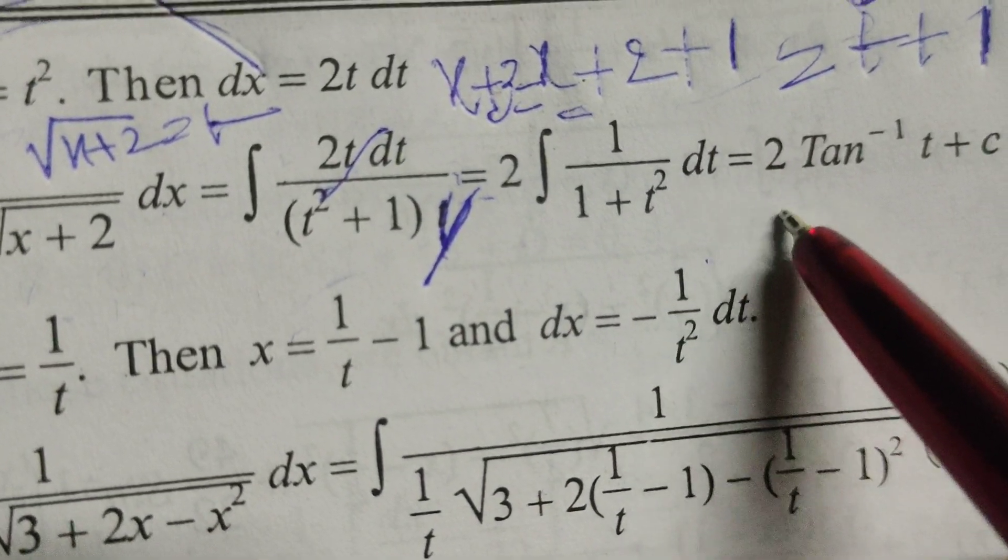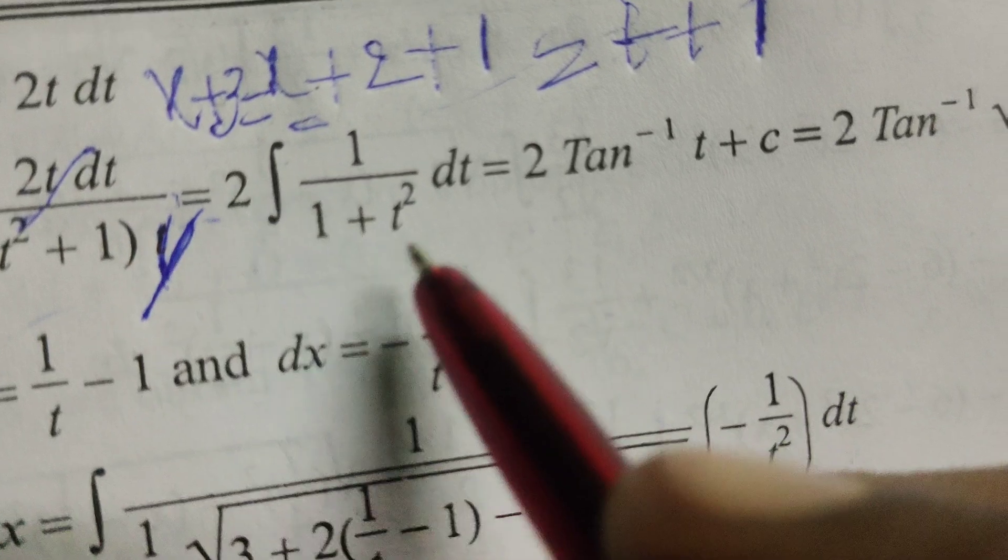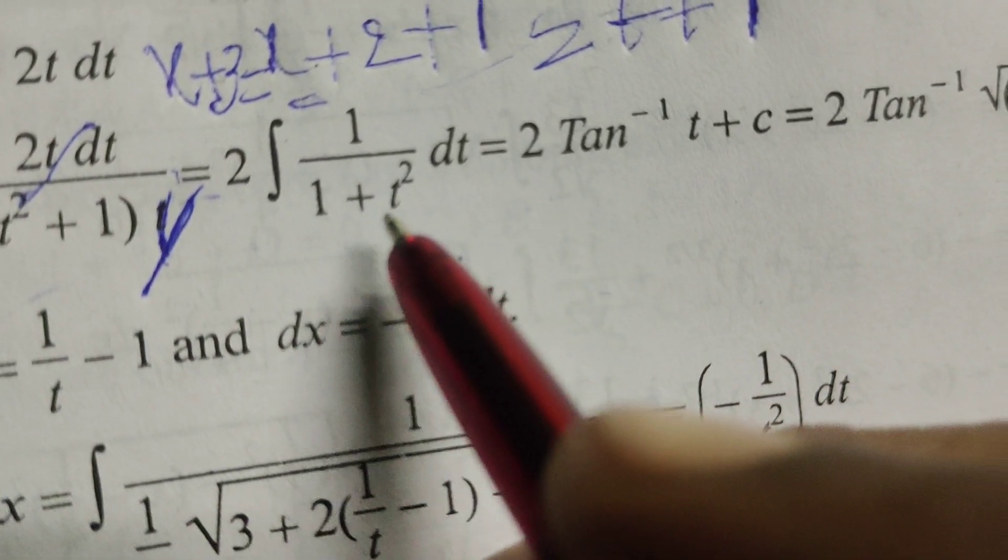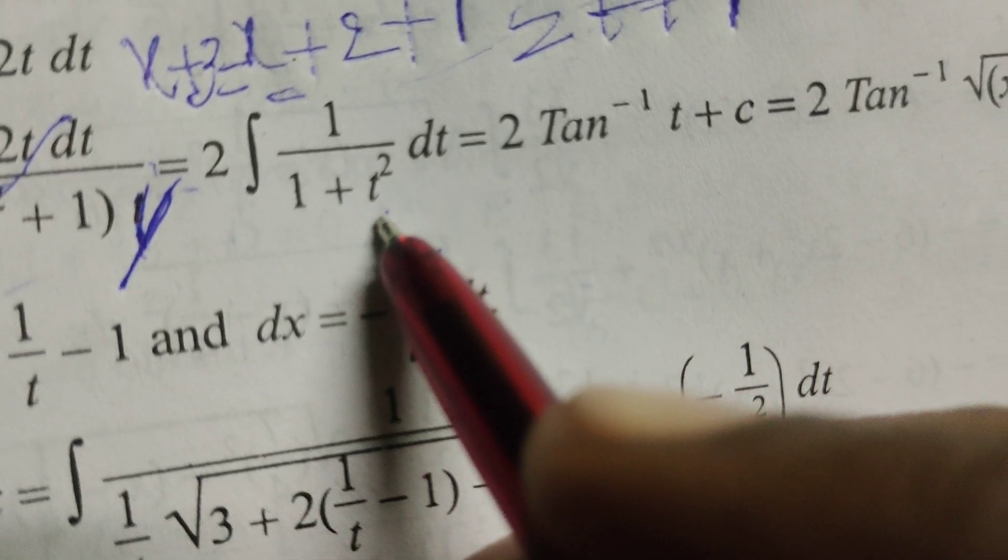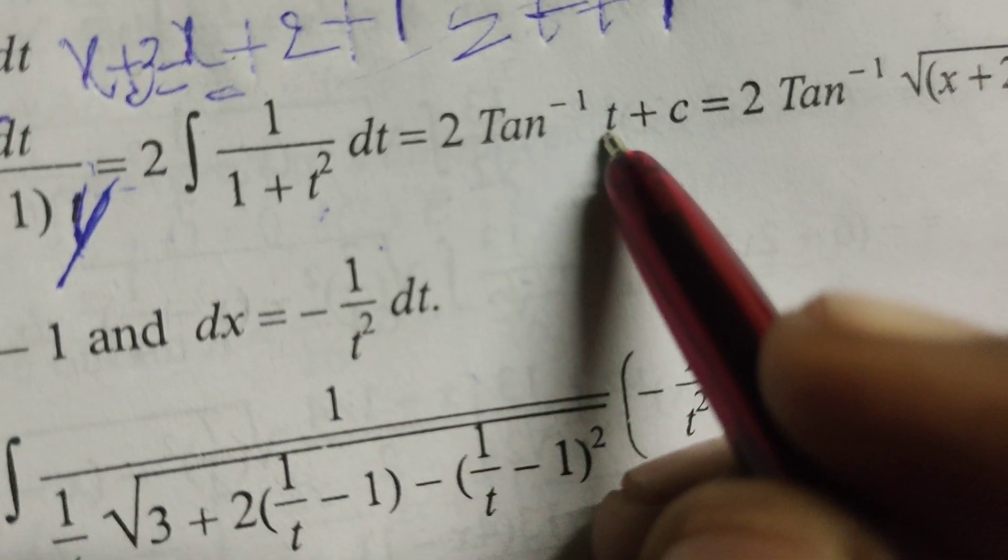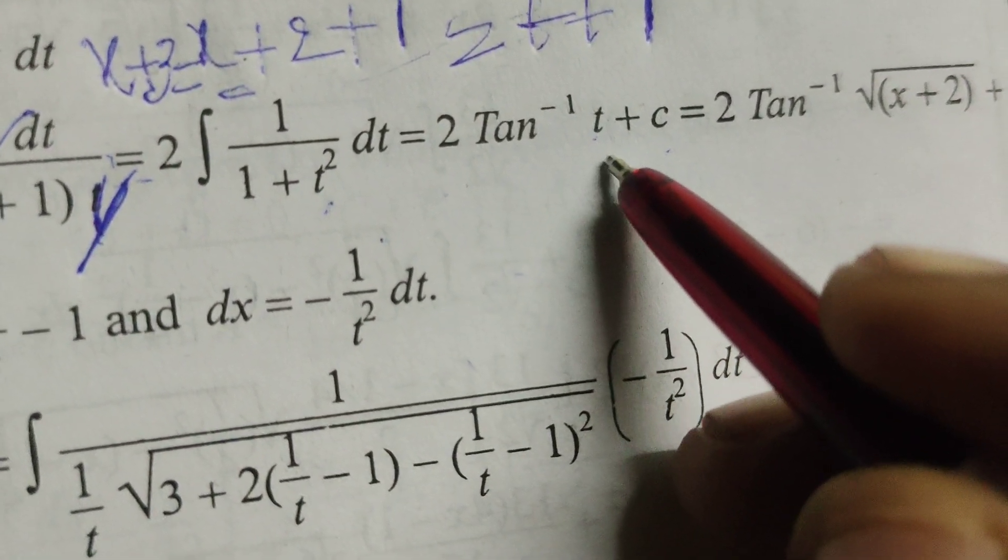1 by t square plus 1 into dt. Here write the formula: 2 into 1 by 1 plus x square is tan inverse x. Here in place of t, t is there. Integral of 1 by 1 plus t square is tan inverse t plus c. After integration, adding the constant c.